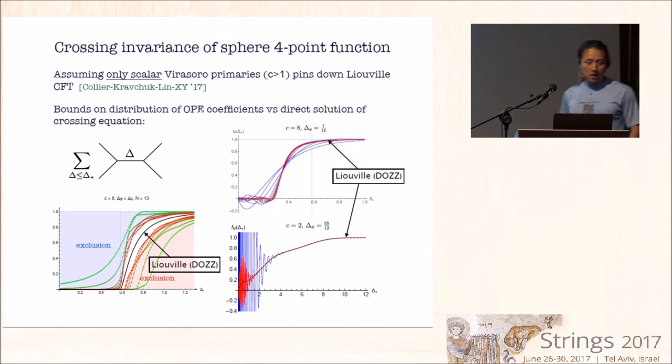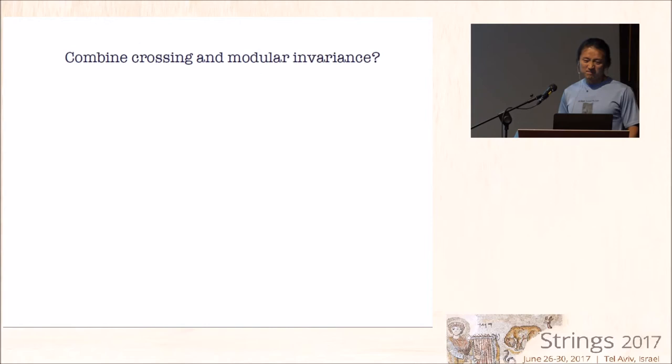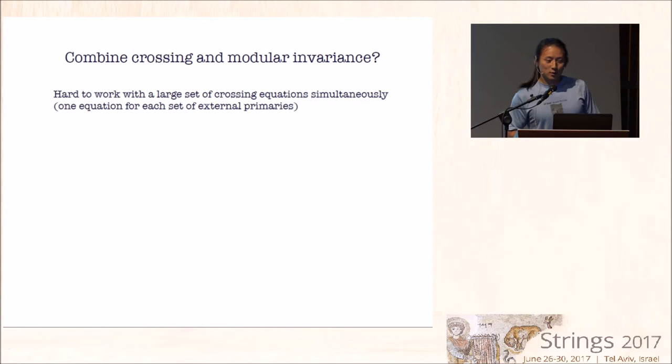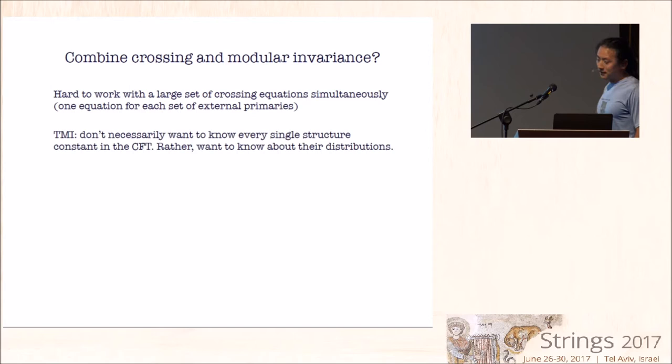So there's a lot of powerful constraints that we can get separately from modular invariance and crossing symmetry, and we'd like to combine them. That is hard to do because it's hard to work with a large set of crossing equations simultaneously. But we don't necessarily want to do that because if you want to really do that, you want to keep track of all the operators and all the structure constants. That's perhaps too much information to try to keep track of simultaneously.